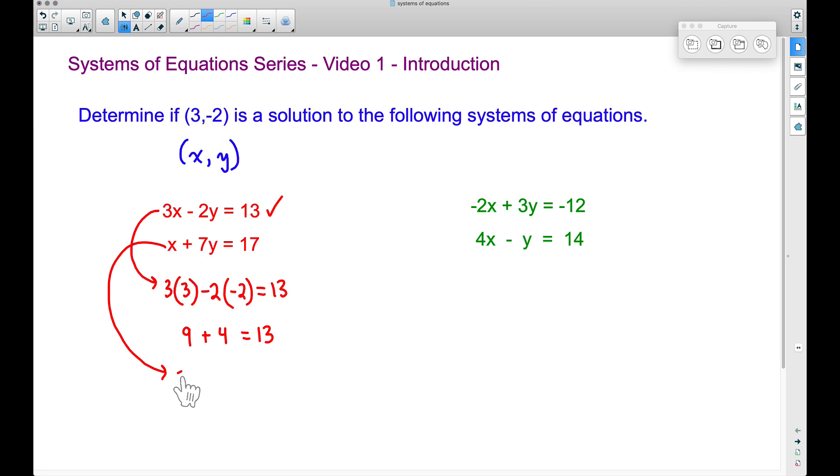So we have x, which is three, plus seven times our y, which we said was negative two, and let's see if this gives us 17. Does this equal 17? That's the question.